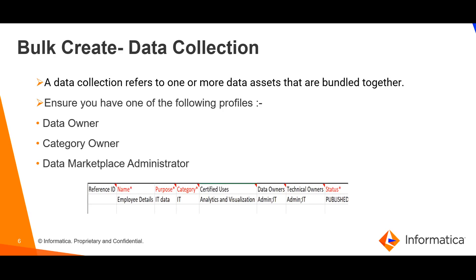Next, purpose — it gives the context or the definition of the data collection to be created. Next, category — this is the category name in which the data collection needs to be created. Next, certified users — this gives the context in which the data is to be used. Next, data owners and technical owners — these are the users responsible for the data collections. We can mention the group name or the email ID of the users. Next, status — this takes two values: published and unpublished.